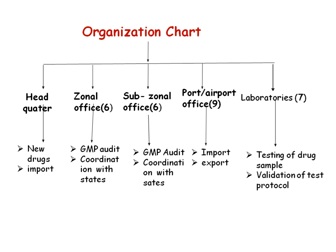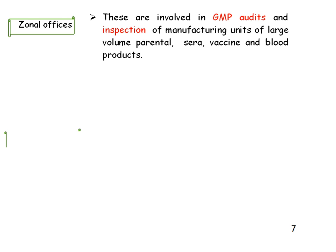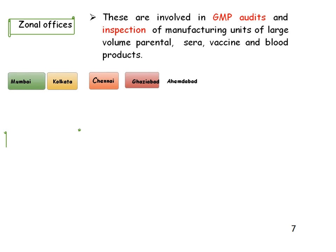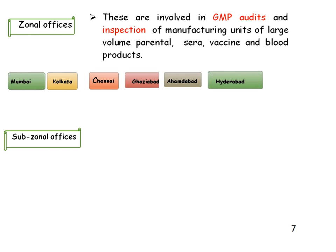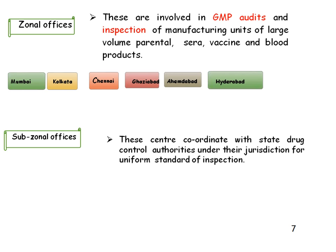Seven laboratories are present, helpful for testing drug samples and validation of test protocols. Zonal offices are involved in GMP audit and inspection of manufacturing units for LBPs, sera, vaccines, and blood products. These zonal offices are present in Mumbai, Kolkata, Chennai, Ghaziabad, and Ahmedabad. Sub-zonal offices coordinate with State Drug Control Authorities under their jurisdiction for uniform standards of inspection, and are present in Bangalore, Varanasi, Goa, Jammu, Indore, Guwahati, and Baddi.